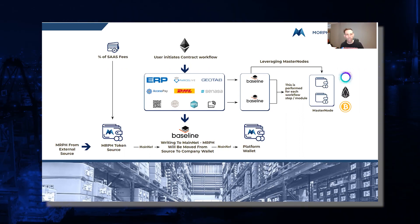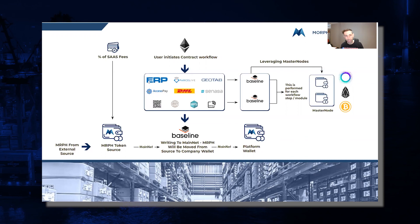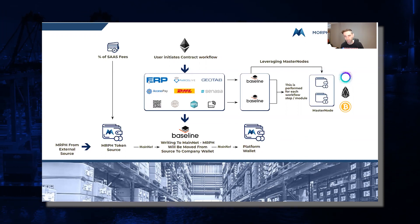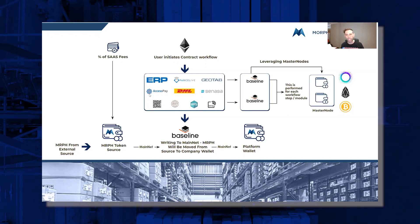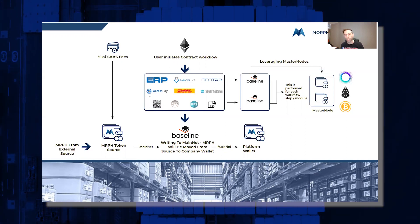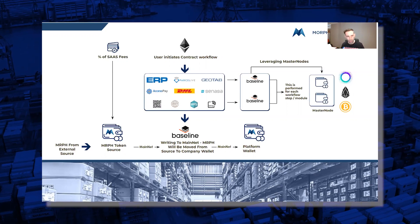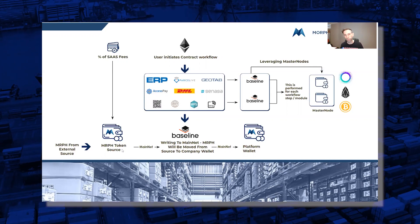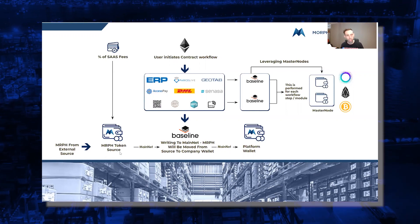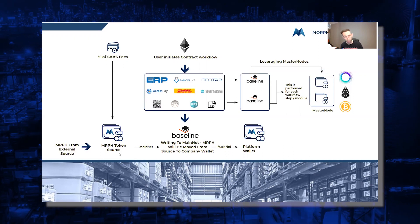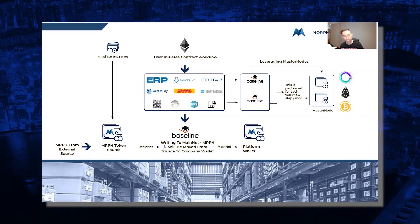As you can see, the way that we charge the clients is the SaaS fees — the software as a service fees. That's what the client pays us, and a percentage of those SaaS fees is actually taken and used for the backend, which is the notarization of the completion of each one of these modules. We have our token source wallet — the MRPH token source — always accessible, and we're replenishing that wallet from an external source as you see here.